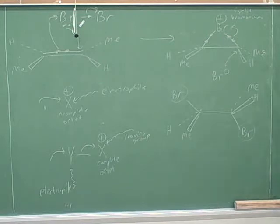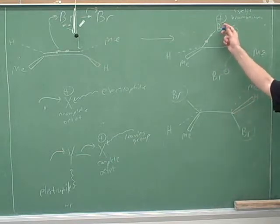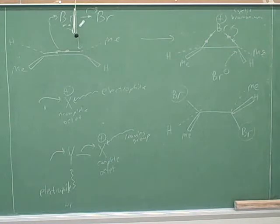Steric hindrance. Why does the second bromine come in from the opposite direction to the first? Because the first direction is still being blocked by the first bromine. So that's a steric hindrance argument. This is an anti-addition — that's the most important aspect of this, most likely to be tested. The most likely to be tested aspect of this reaction is the anti-stereochemistry.